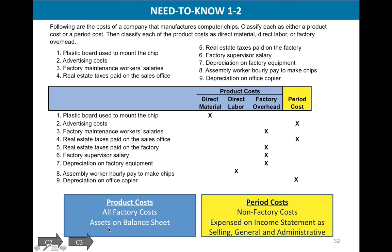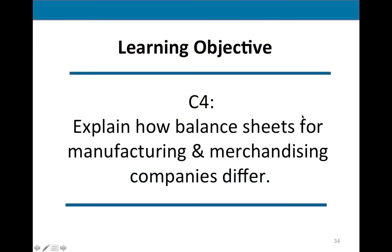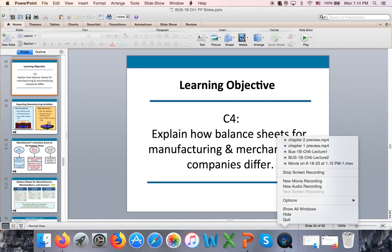Product costs are assets — they all become part of inventory until the final product is sold, remaining on the balance sheet as permanent accounts. Period costs are all expensed on the income statement as operating expenses, split into two subgroups: selling expenses and general and administrative expenses. Prime costs include direct materials and direct labor; conversion costs include direct labor and factory overhead. This concludes the first portion of chapter one. We will continue with video number two. Thank you.